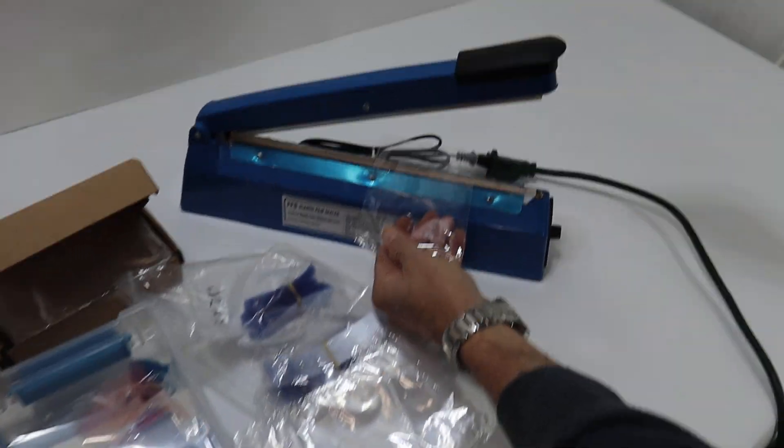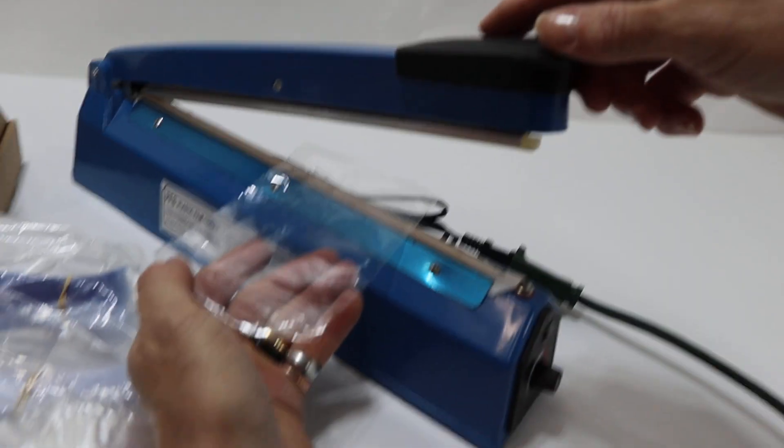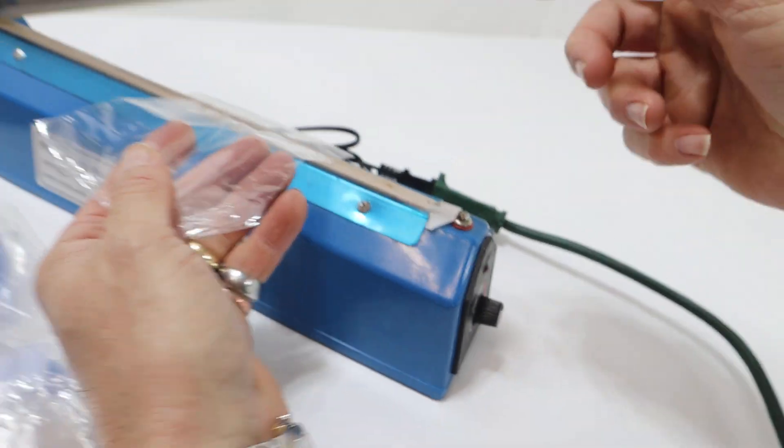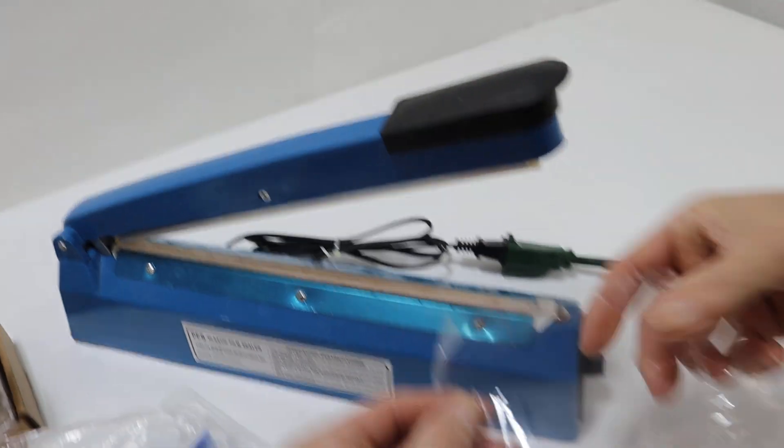We're going to show you that it works. Here, you can see the light up front that it's working. It's a quick seal. It's sealed the bag. We're going to peel it off. We can show you that the bag is sealed.